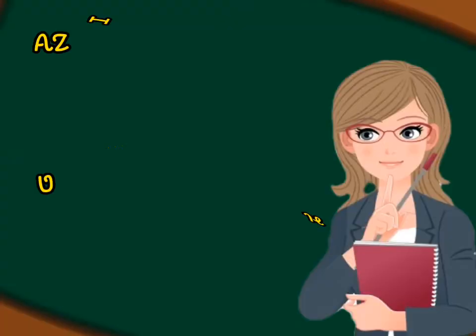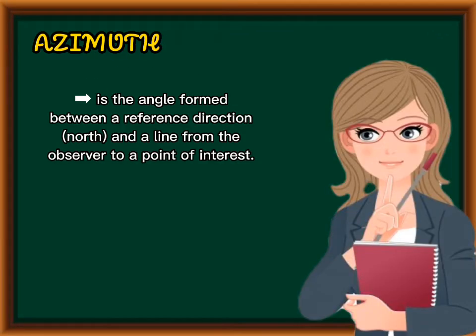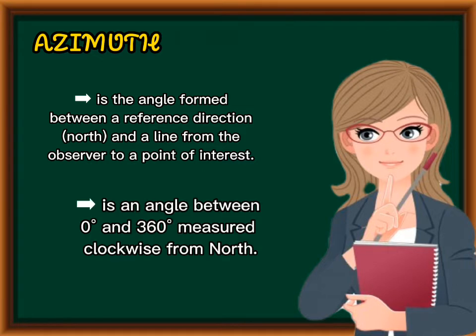So what is azimuth? Azimuth is the angle formed between a reference direction or north and a line from the observer to a point of interest. Azimuth is an angle between 0 degrees and 360 degrees measured clockwise from north.